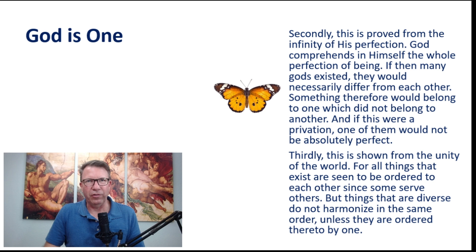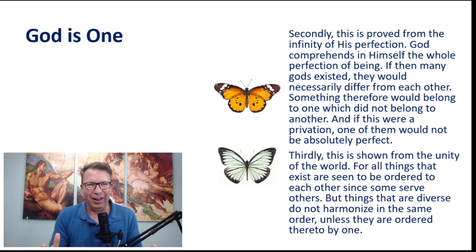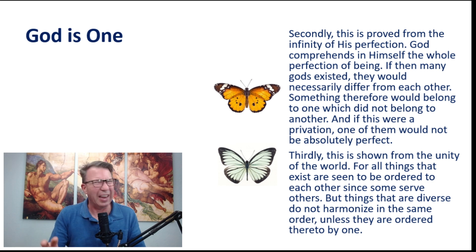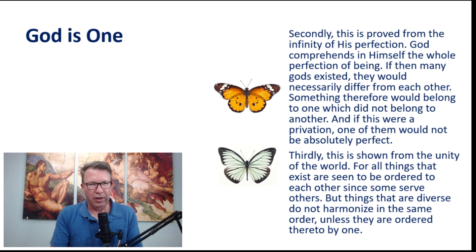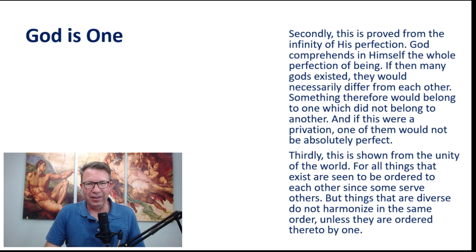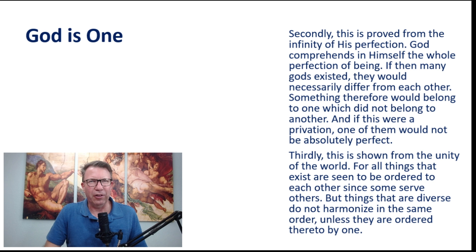Here's an example. Let's say, for argument's sake, that this is the perfect butterfly — there's never been a better butterfly than this one. And then you said this is also a perfect butterfly. Well, you'd ask: is perfection orange, or is perfection more that turquoise color? Because they're different. Since they're different, they can't both be perfect — one of them has to be a little bit better than the other because they're not identical. So this argument says if there were two gods, one of them wouldn't be as perfect as the other because they would have to be different. The third reason is shown from the unity of the world. 'For all things that exist are seen to be ordered to each other since some serve others. But things that are diverse do not harmonize in the same order unless they are ordered thereby to one.'